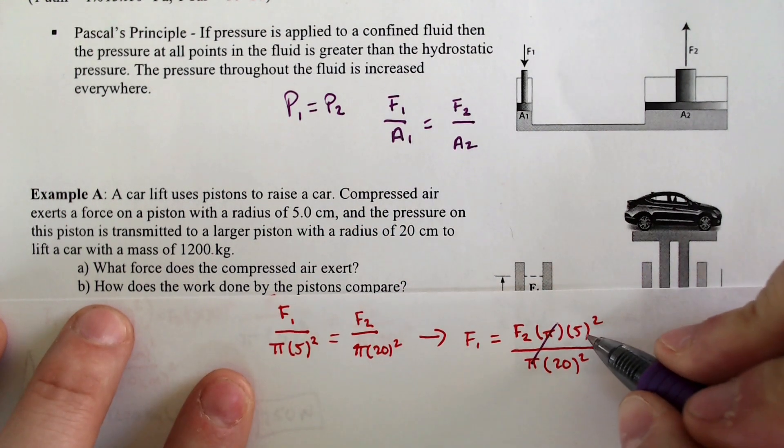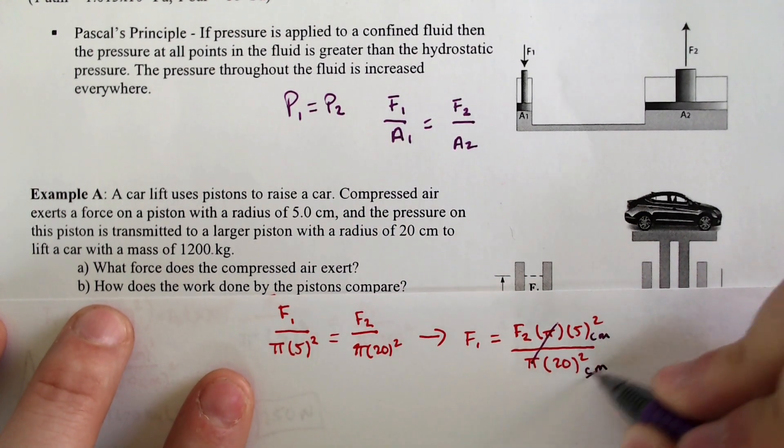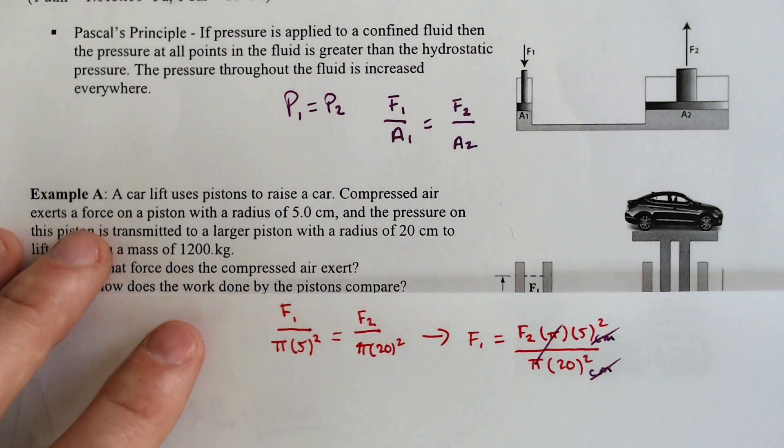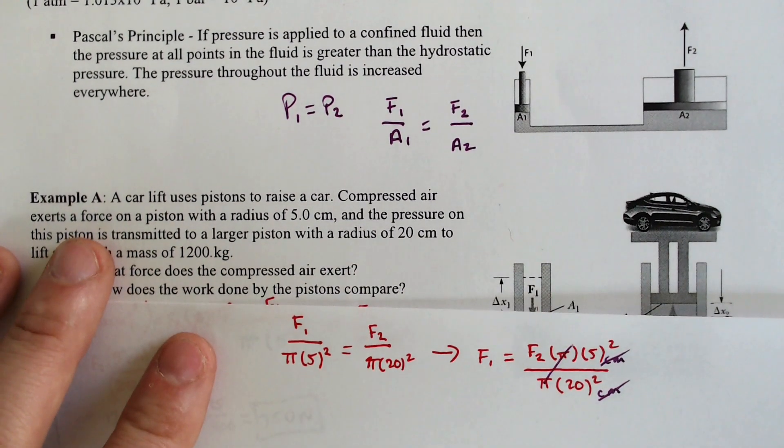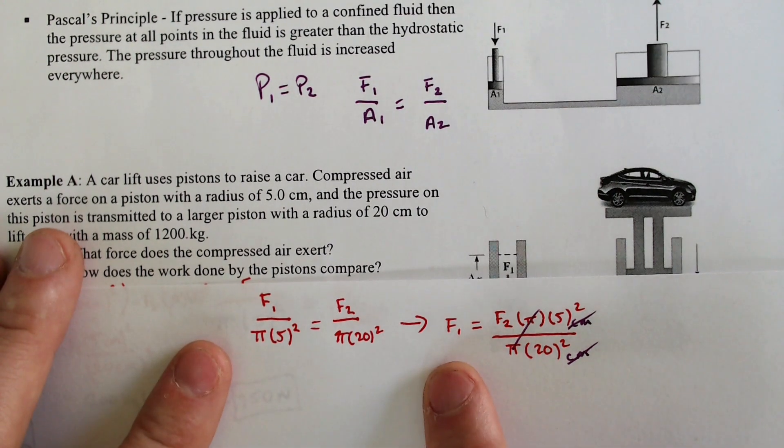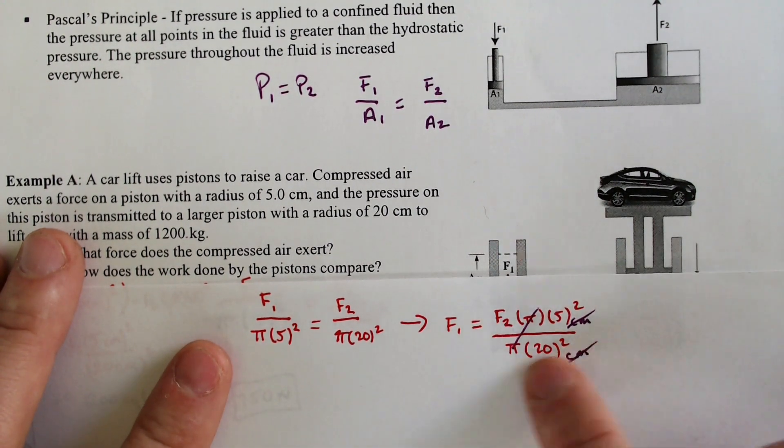And that's because right here, the centimeters, technically, they're squared. They're going to cancel out as well. It's a ratio problem. Therefore, it kind of just doesn't matter as much.